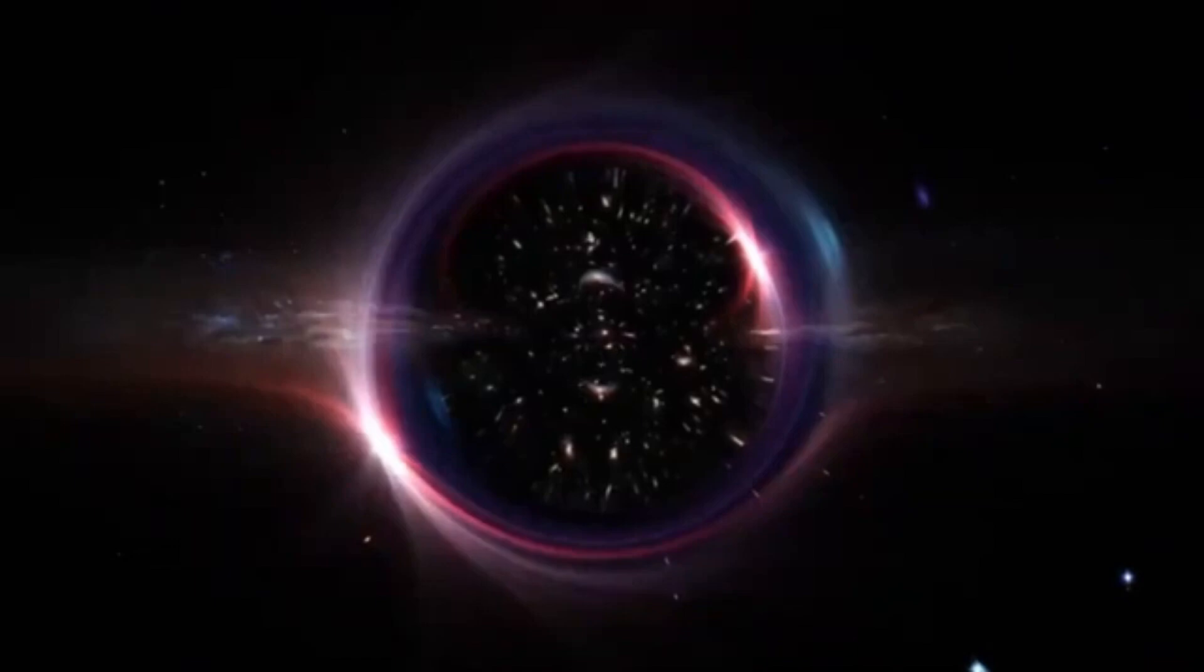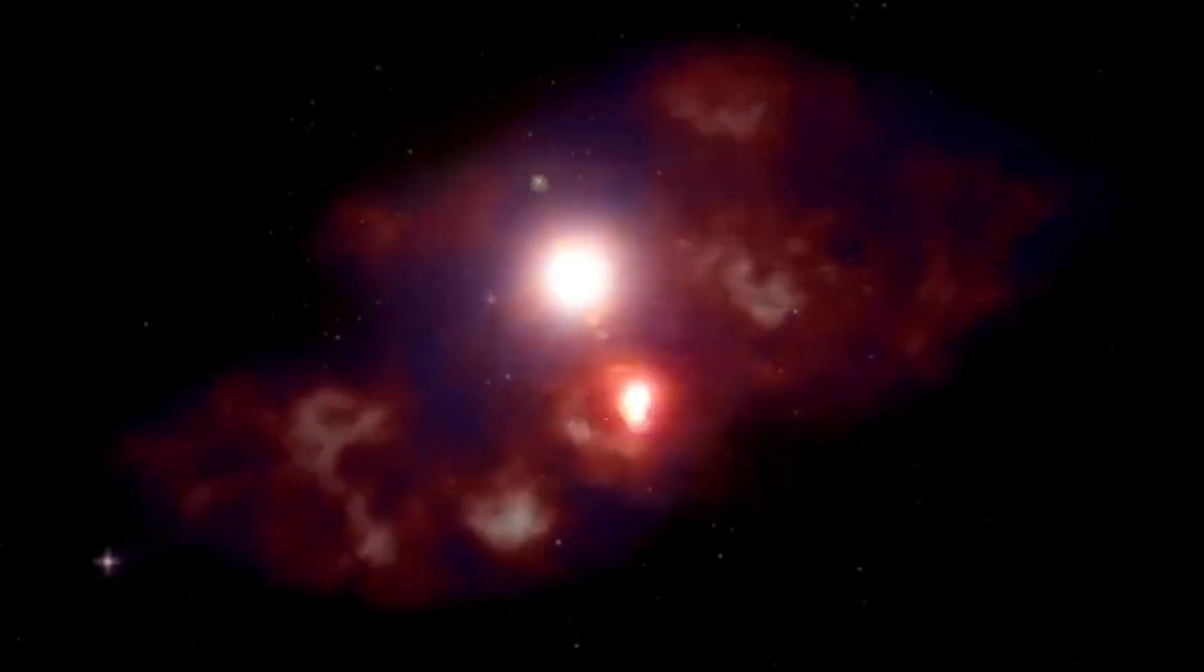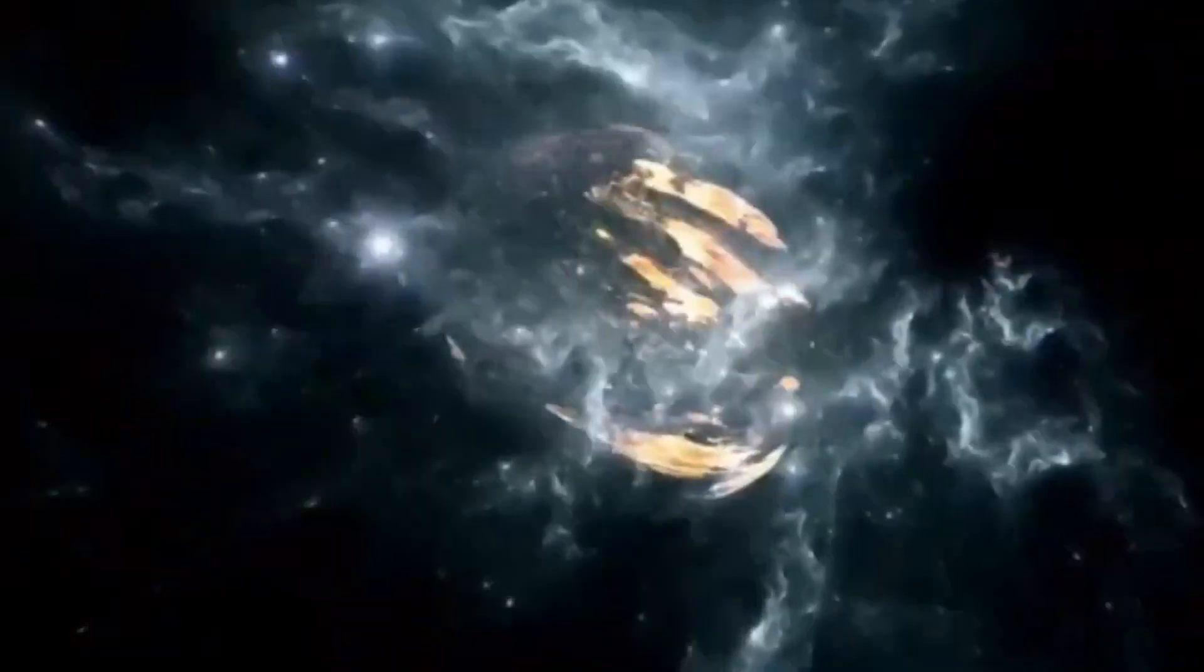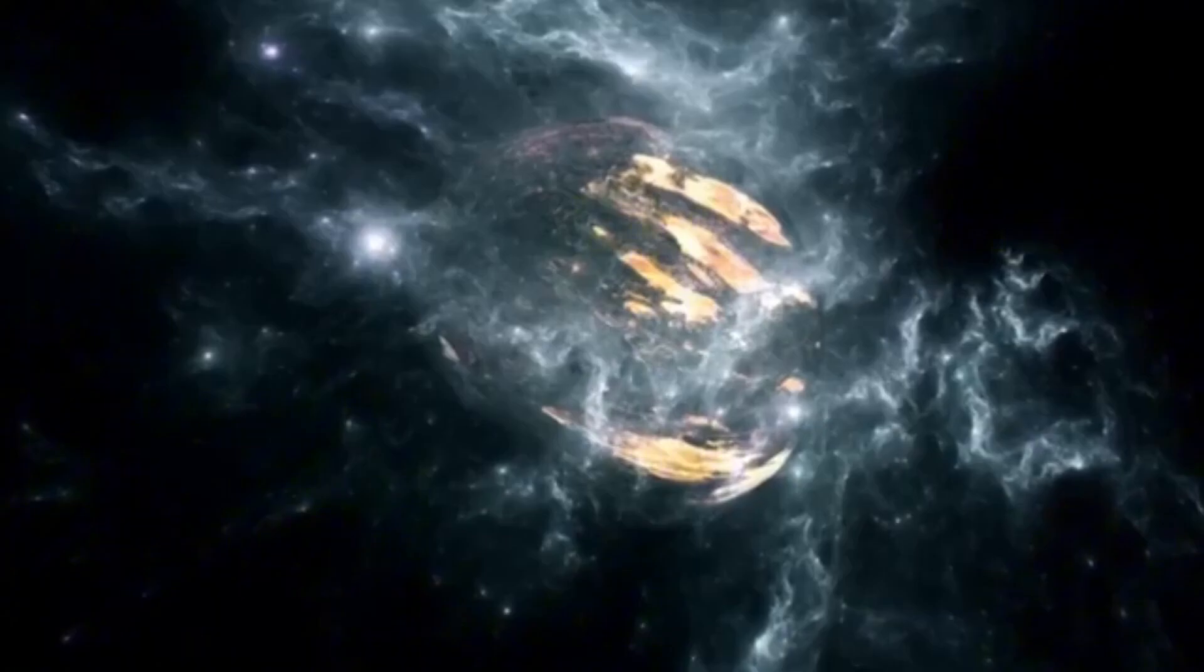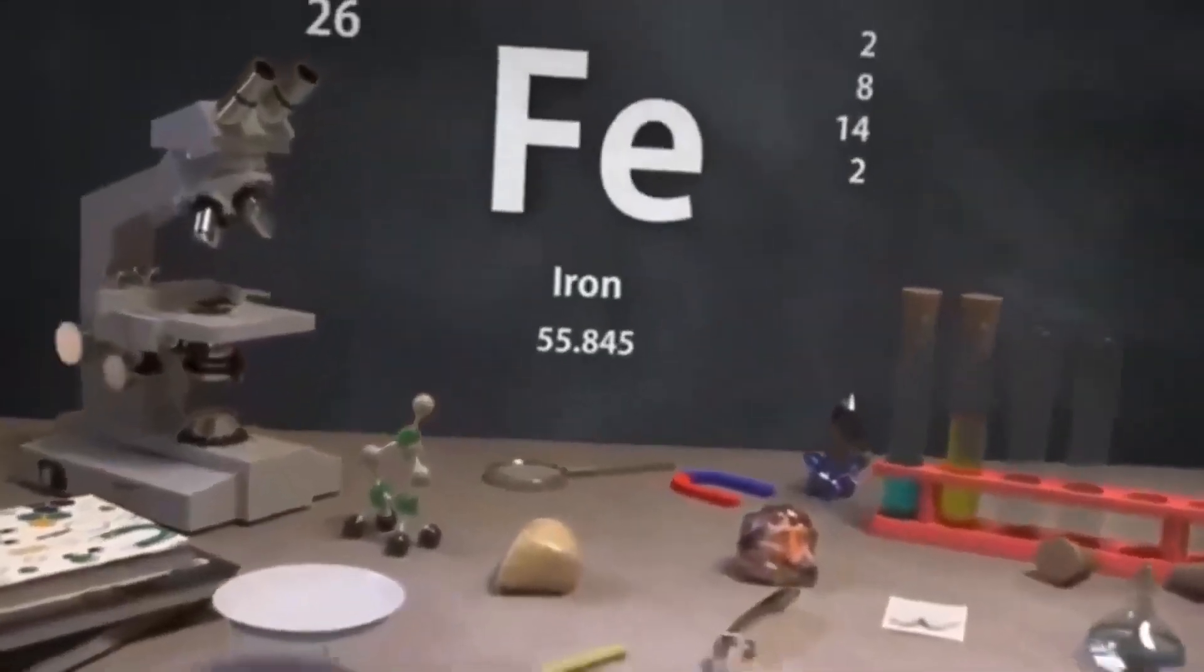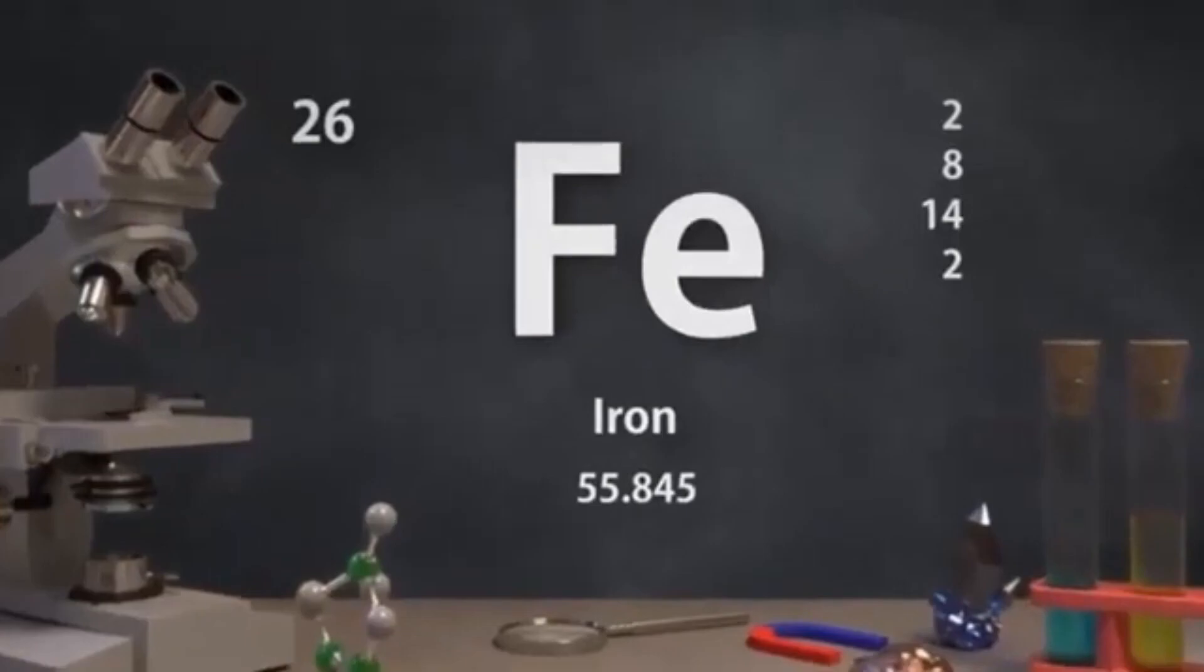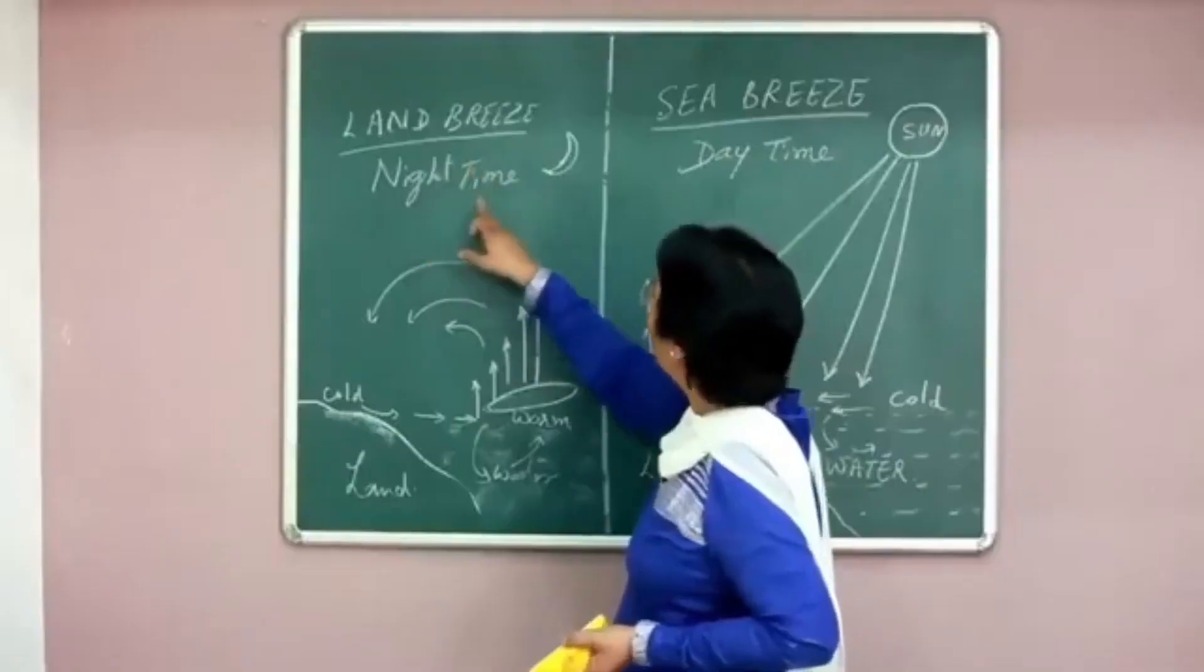Betelgeuse is a pulsating variable star. Its brightness ebbs and flows like a cosmic heartbeat. Its outer layers expand and contract in cycles. Some short, around 185 days, others stretching over 2,300 days. When it expands, its surface cools and dims. When it contracts, it heats up and blazes brighter. These pulsations aren't just quirks, they're driven by the star's internal chaos. Deep within, convection currents churn, carrying energy from the core to the surface. These currents create bright spots, like solar flares on steroids, adding to Betelgeuse's erratic glow. It's a star that refuses to sit still, a living, breathing enigma.